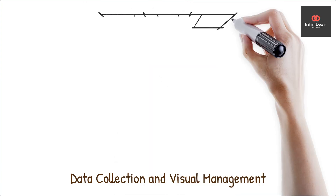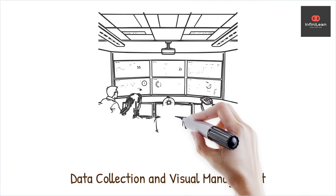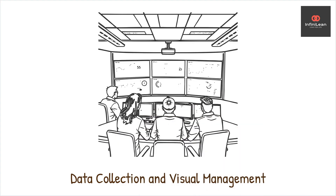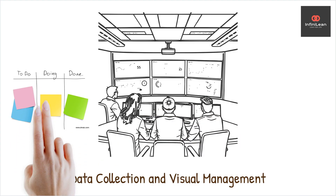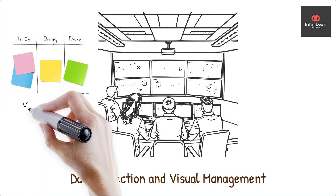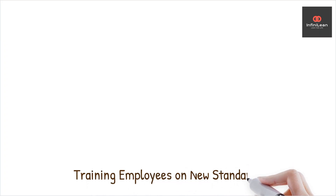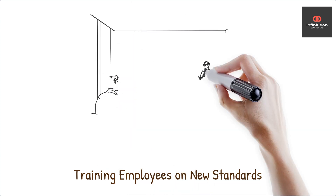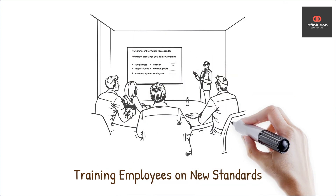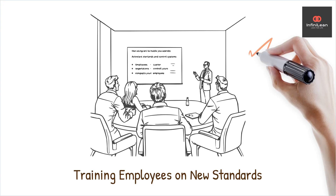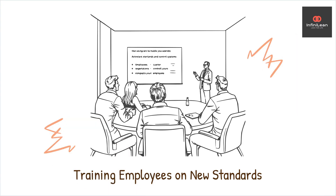Another fundamental task is consistently collecting data. By gathering data on the improved process, teams can ensure that the changes made continue to meet the required performance standards and enable swift correction if needed. Visual management tools display these data to the team to ensure everyone understands the current performance. Another crucial element is training — employees involved in the process must be thoroughly trained on the new standards and control systems, guaranteeing everyone understands their role in maintaining the improved process.